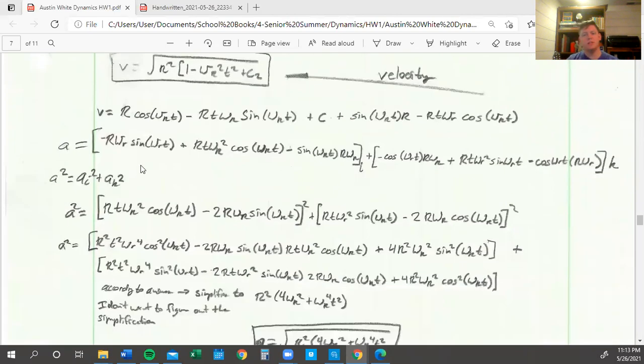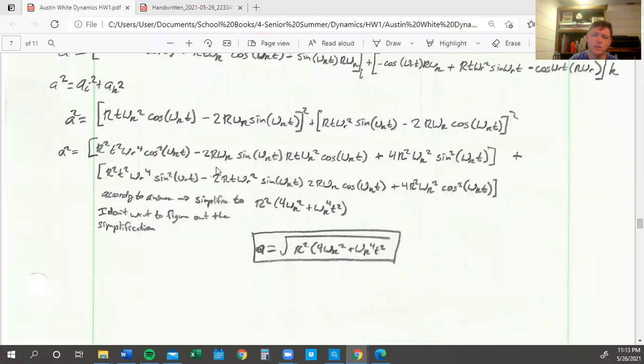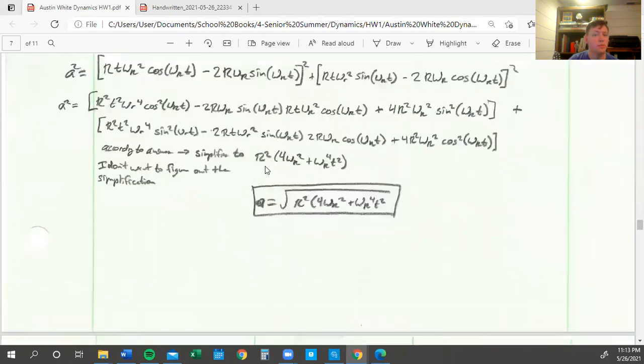Then we need to find the magnitude of acceleration. We take our velocity equation and differentiate that, which turns into this big long equation. Then we have to square that on top of all that, which gives us an even longer equation. Somehow it all cancels out and we end up with this equation almost magically, according to the answer.